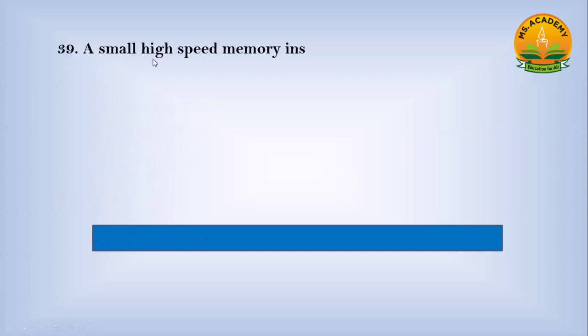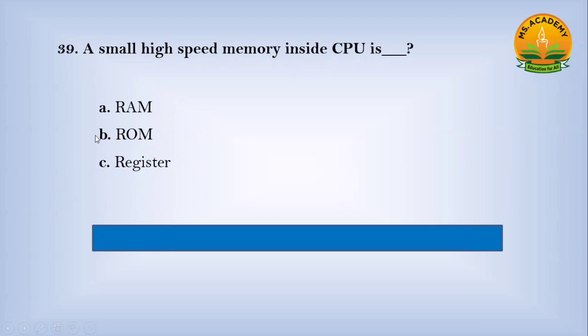A small high-speed memory inside the CPU is dash. Option A RAM, option B ROM, option C Register. Answer: C. Number Register.